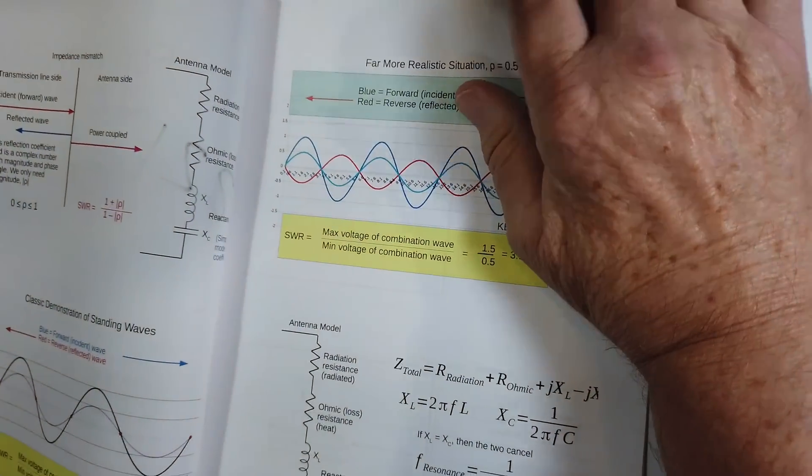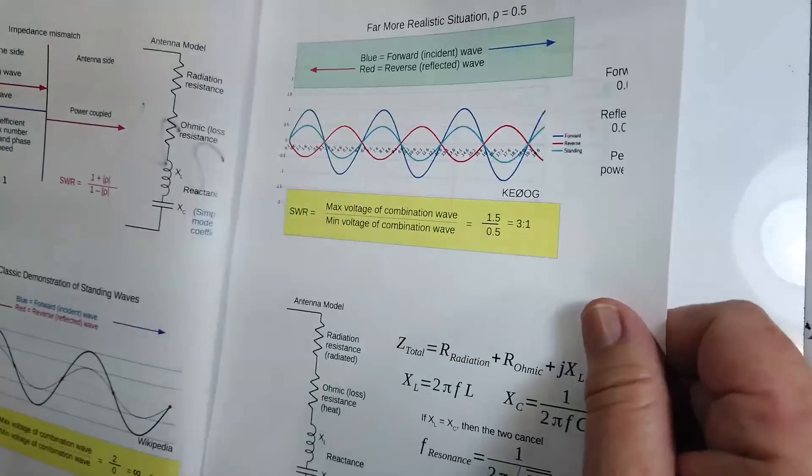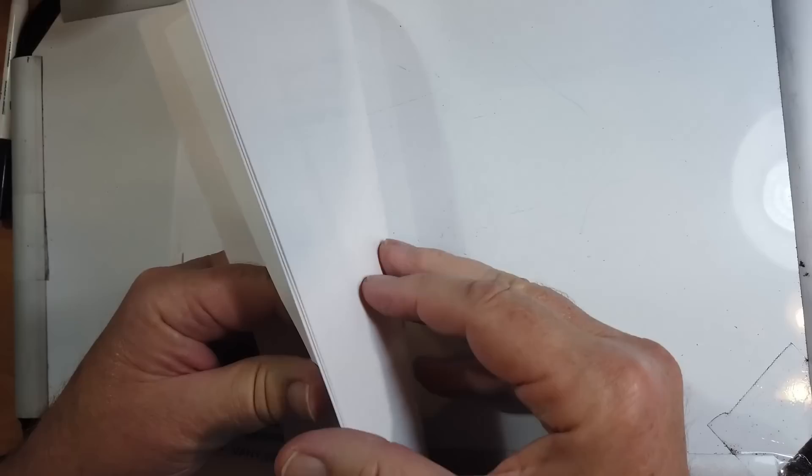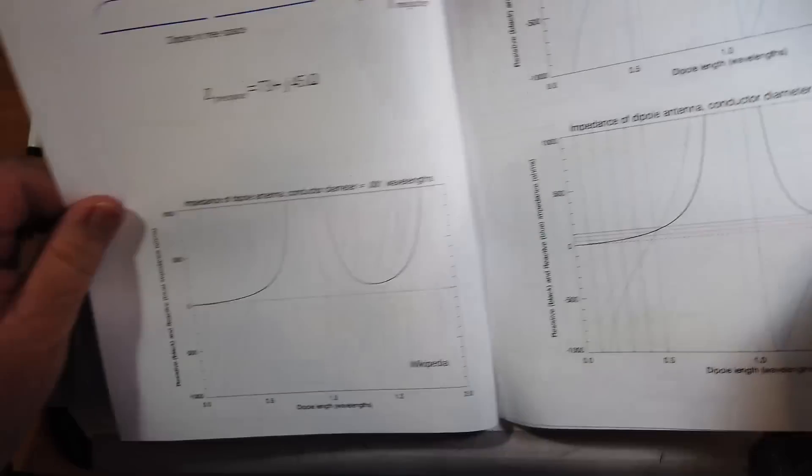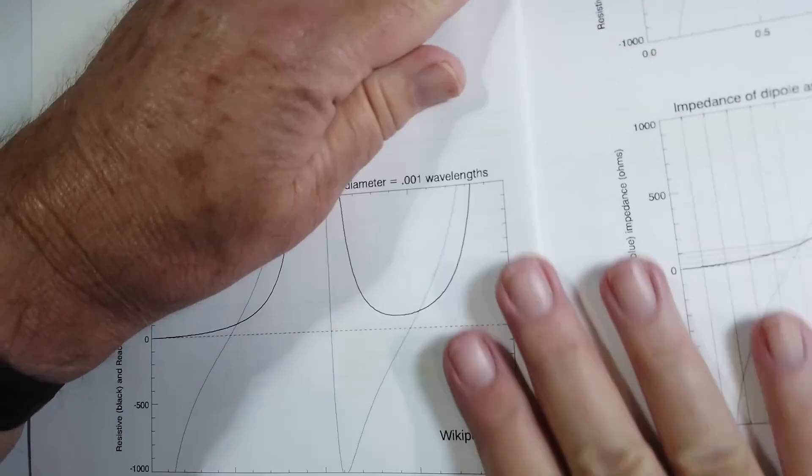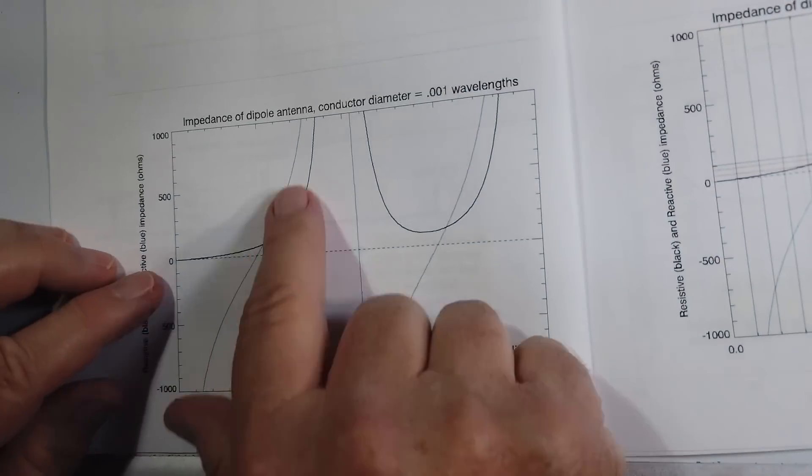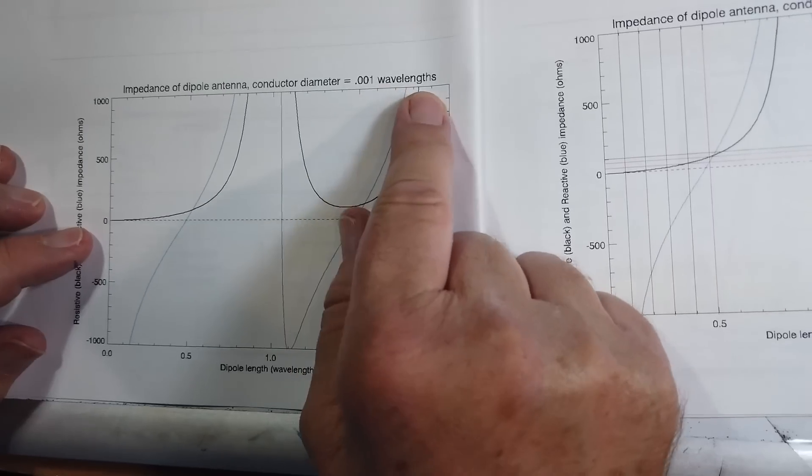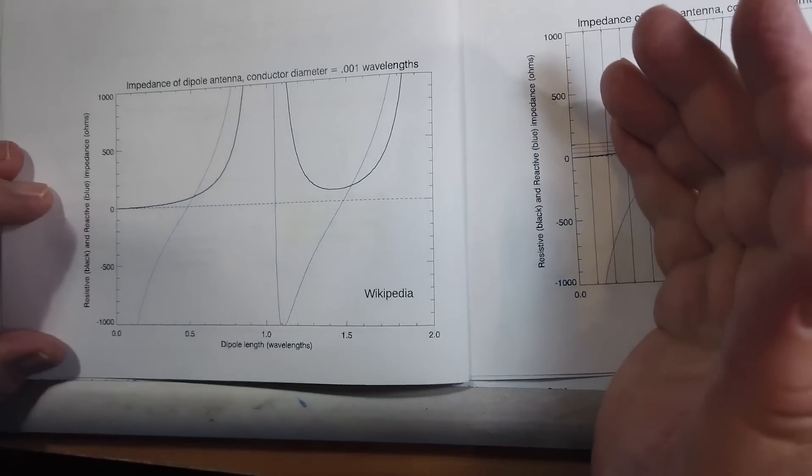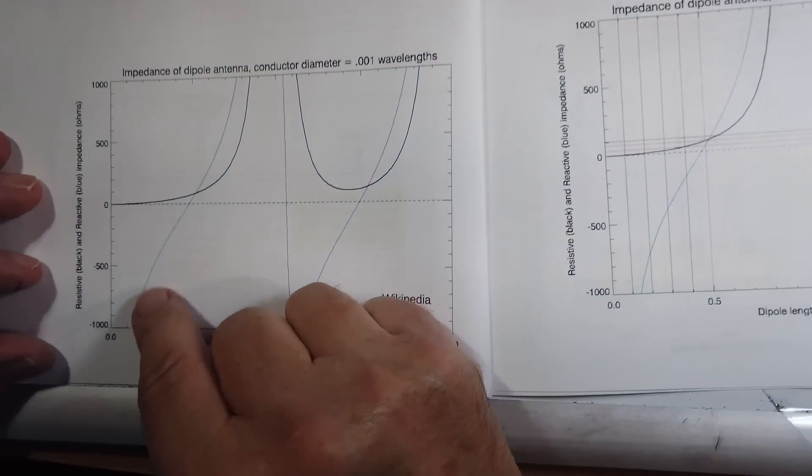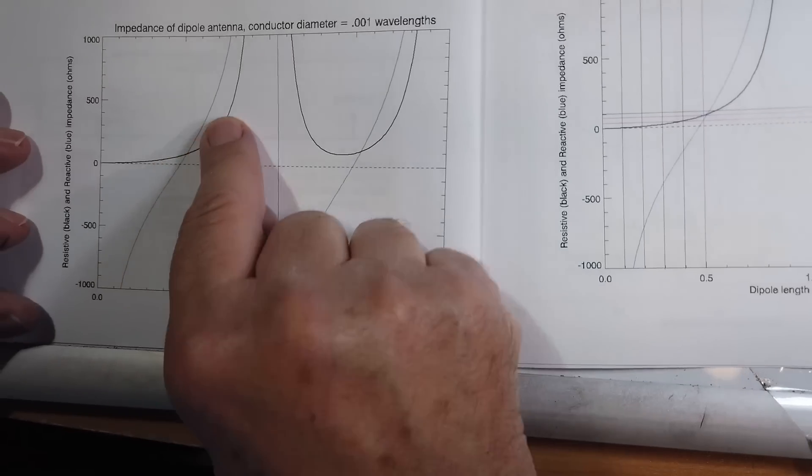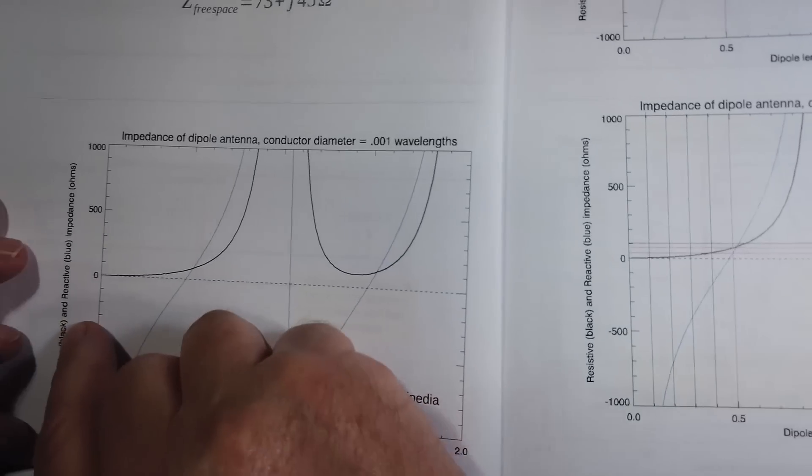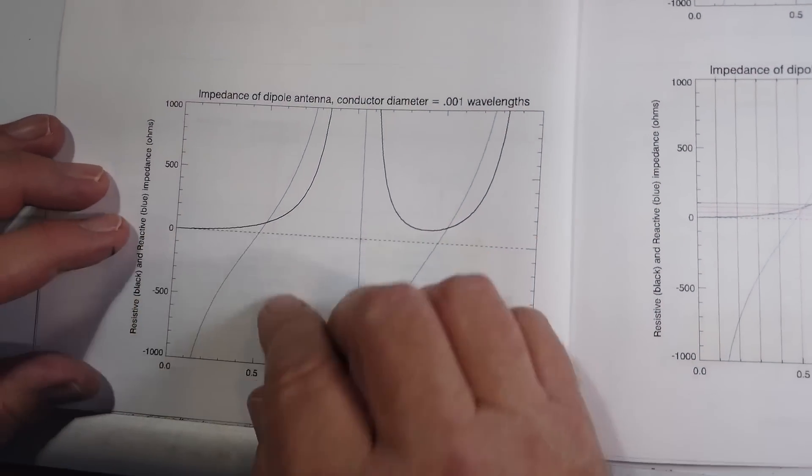And here we look at a variety of things that can happen. But what's important is this chart here. Now this is the impedance of a dipole antenna with a conductor diameter being a thousandth of the wavelength, which would be normal. The resonance is black and the reactance is blue.